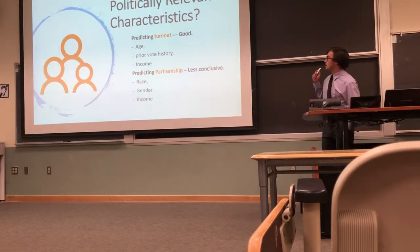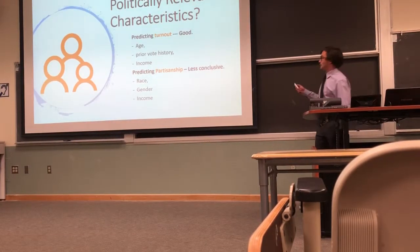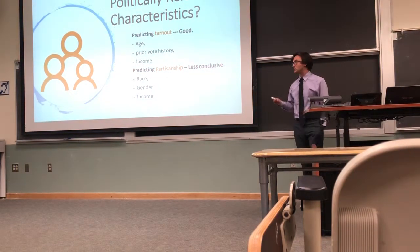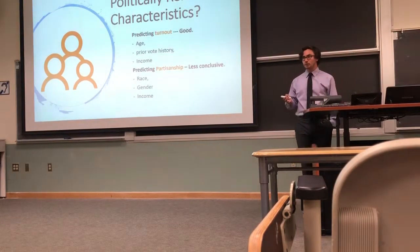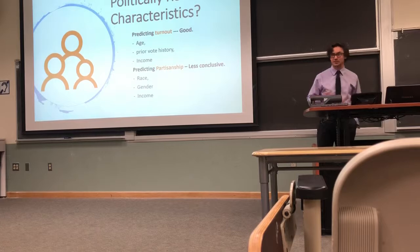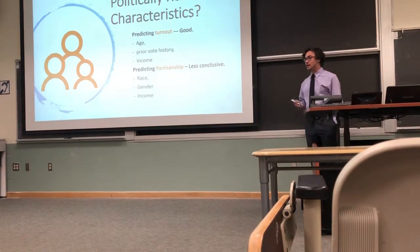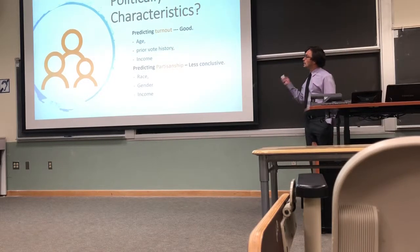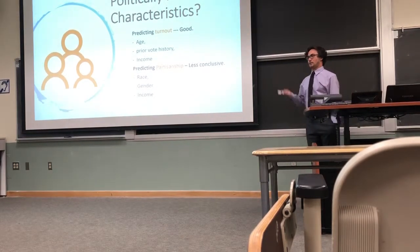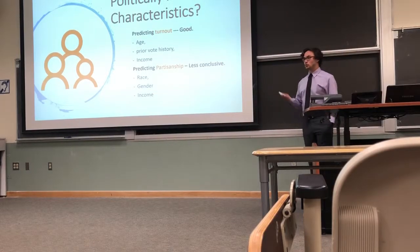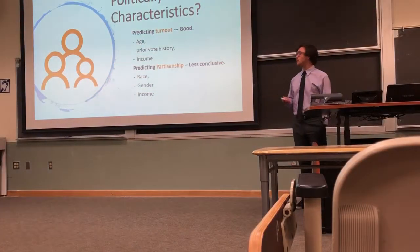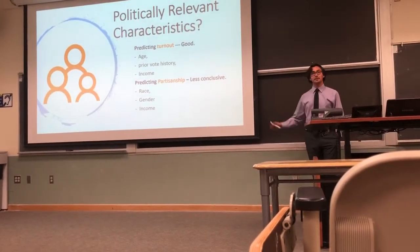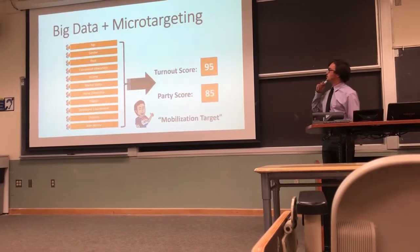But how good are we actually at doing those things? Political science has shown that we're pretty good at predicting your likelihood to turn out. Factors like age, prior vote history, and income have all been proven to be related to whether or not you're likely to come out to vote. We're less good at predicting partisanship using this sort of demographic information. Obviously your race, gender, and income are associated with your political party, but it's less definitive. So how campaigns operate in this space of ambiguity is what I want to get at with my presentation today.